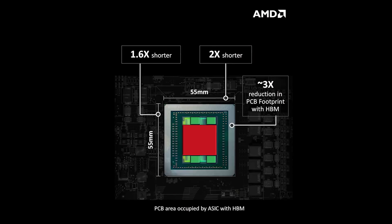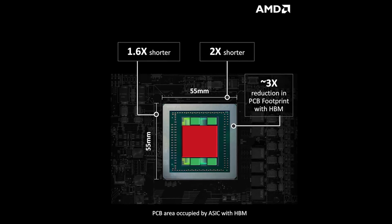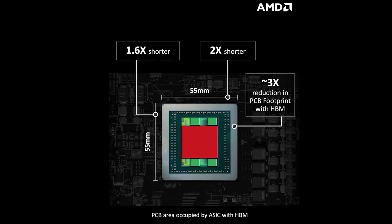HBM solves these problems two ways. Number one, the VRAM is now directly attached to the GPU package, meaning that HBM requires no more space than what's already normally taken up by the GPU.